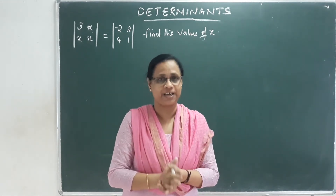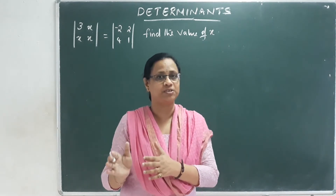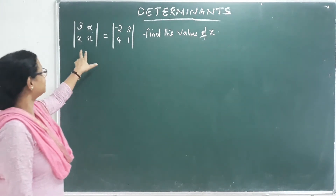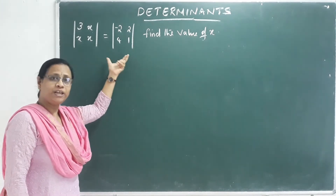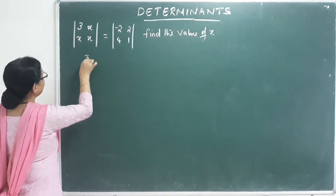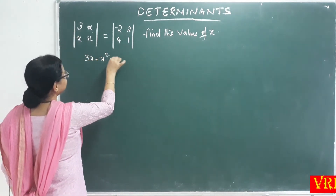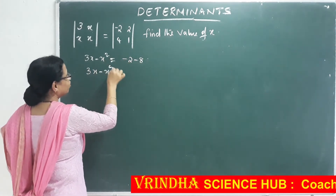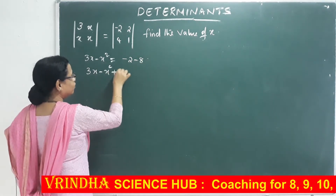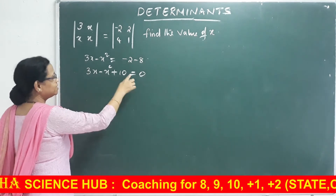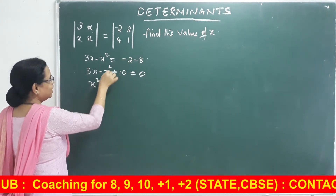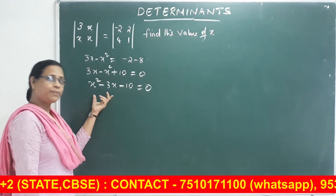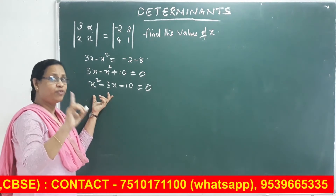A inverse, find the value of X. The three types of questions I will do. First question: find the value of X — one determinant. We have equality. So 3X minus X squared is equal to minus 2 minus 8. That gives us 3X squared minus X squared minus 10 plus 10, which is equal to 0.